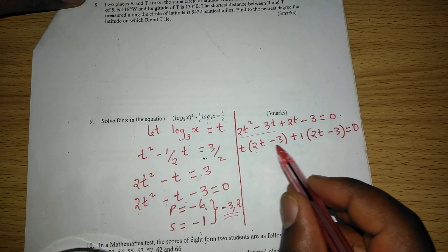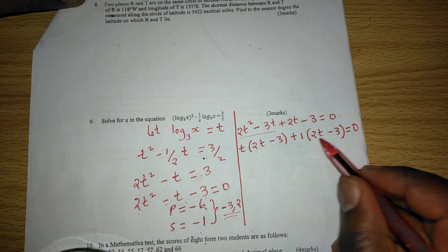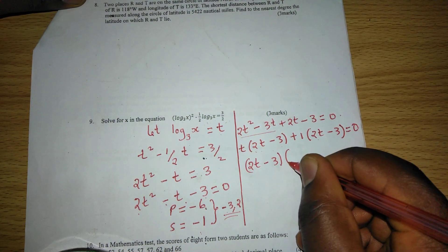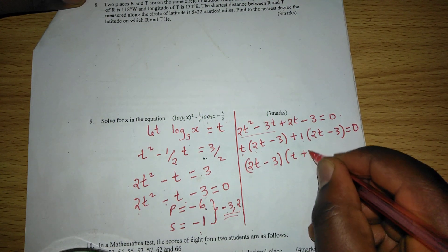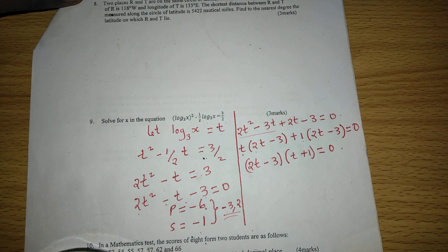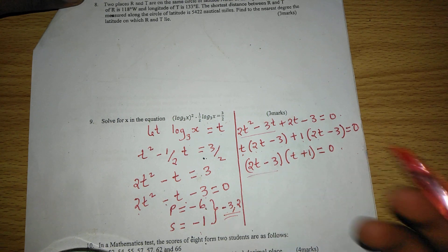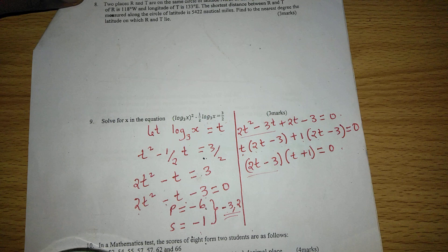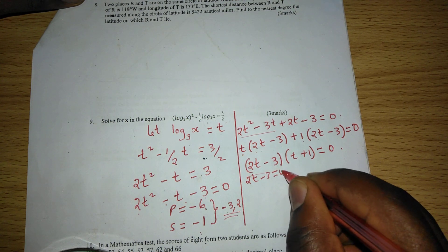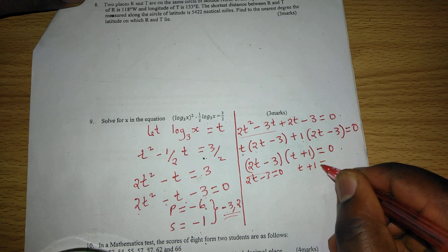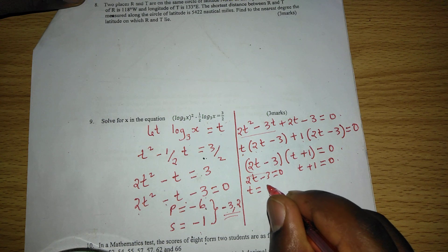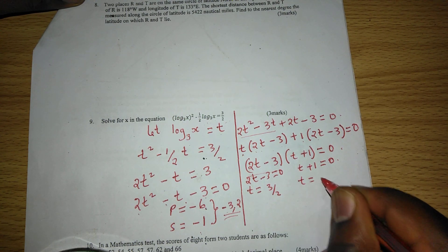Here we can see 2t minus 3 is appearing twice, so we can pick 2t minus 3 and also we pick t plus 1 equals 0. Therefore, here we have two roots which can separately be equated to 0 to get two distinct values of t. So 2t minus 3 equals 0 and also t plus 1 equals 0. This means that t equals 3 out of 2, and t equals negative 1.